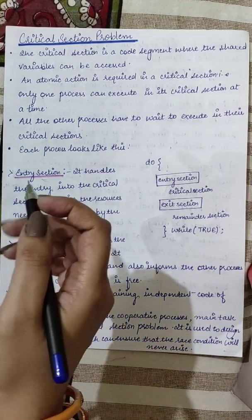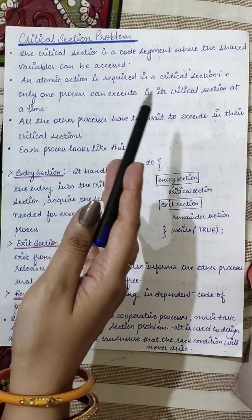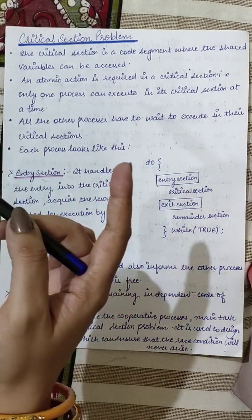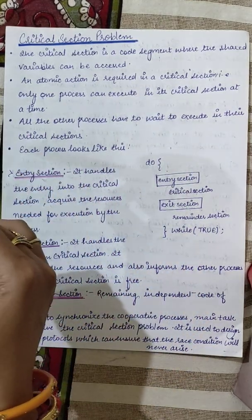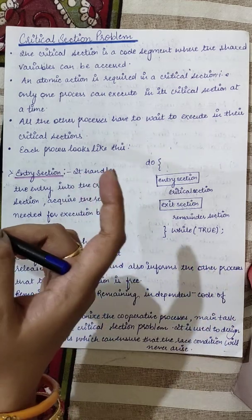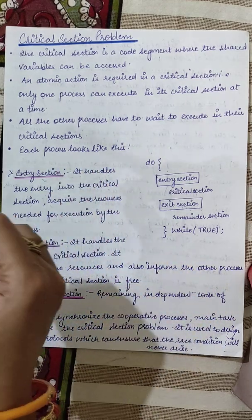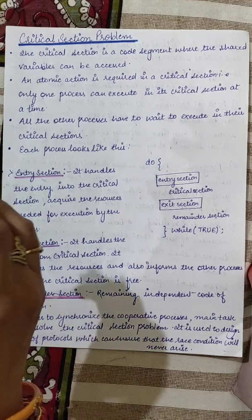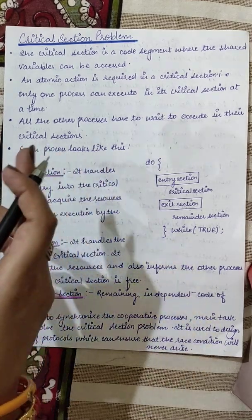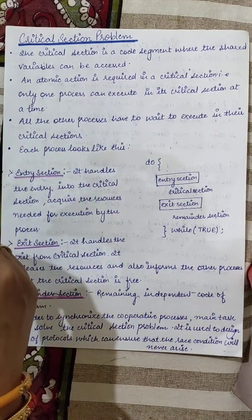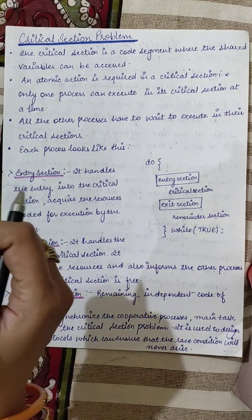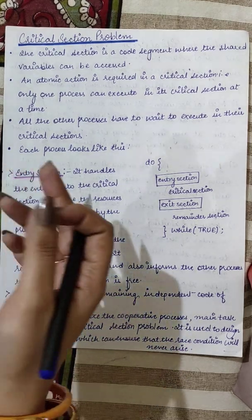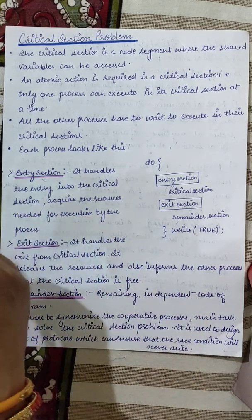If the critical section is handled by atomic actions — that is, only one process at a time executes that critical section and updates or modifies the shared variable — then there will not be any errors. But if there are many processes in the critical section modifying the shared resource, then there will be data inconsistencies, as we have seen in the last example.